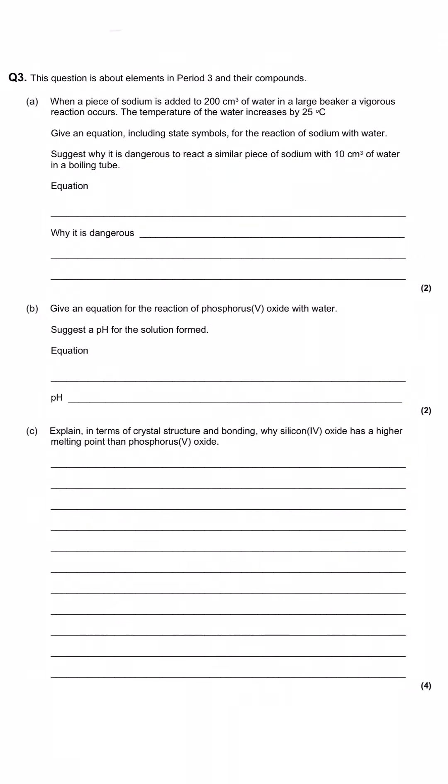This question is about the elements in period 3 and their compounds. Part A: When a piece of sodium is added to 200 cm³ of water in a large beaker, a vigorous reaction occurs. The temperature of the water increases by 25°C. Give an equation including state symbols for the reaction of sodium with water and suggest why it's dangerous to react a similar piece of sodium with 10 cm³ of water in a boiling tube.